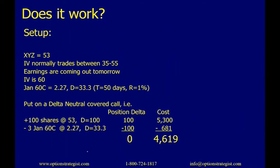Now let's look at something more real. We have XYZ stock at $53, with volatility that normally trades between 35 and 55. But earnings are coming out tomorrow — the volatility is currently at 60, higher than the high end of its range, which is very common before earnings. After earnings are announced — whether good, bad, or inconclusive — the volatility will come in. That's one of the few things we can say with confidence: if earnings come out, then volatility will decrease. So I want to put on a delta neutral position.